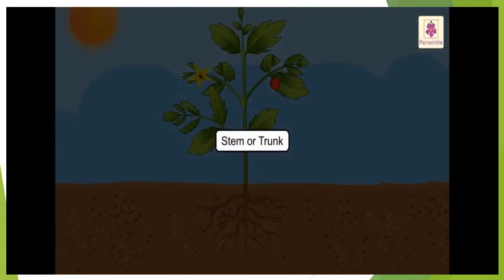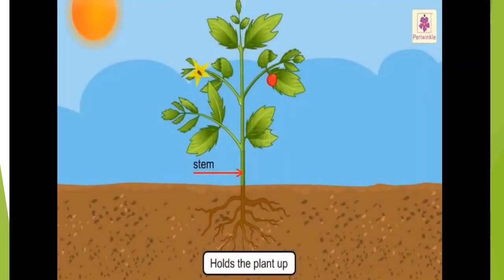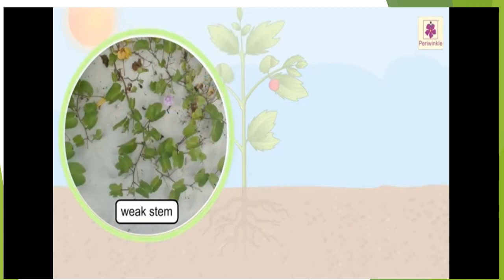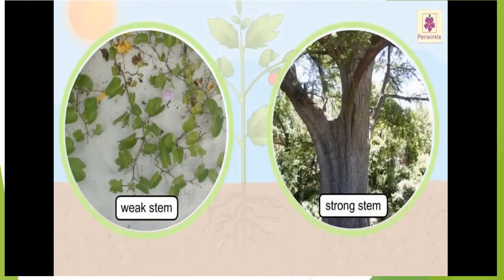Stem or trunk — if it is a part of a plant we say stem; if it is a part of a tree we say trunk. The stem holds the plant up and takes food and water to all parts of the plant. Some plants have weak stems and some have strong stems.